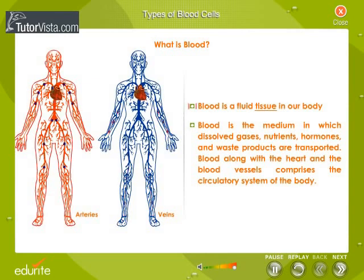Blood is a fluid tissue in our body. It is the medium in which dissolved gases, nutrients, hormones and waste products are transported. Blood, along with the heart and the blood vessels, comprises the circulatory system of the body.